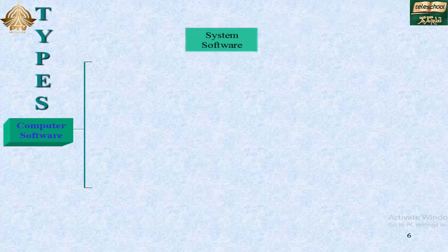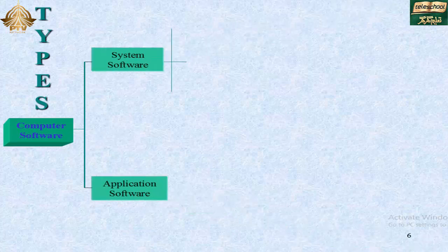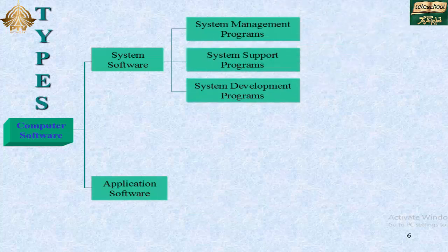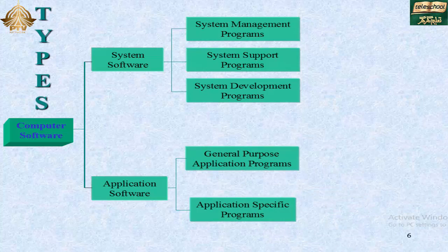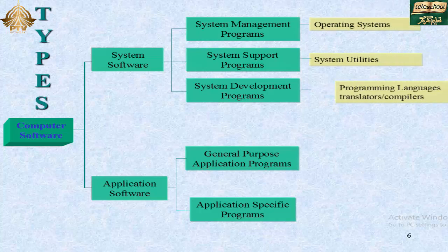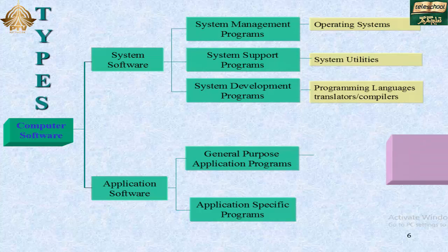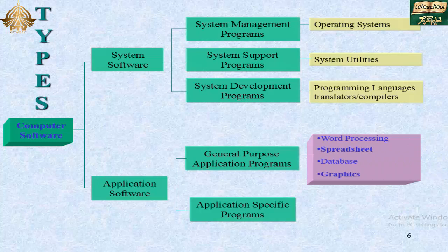Types of computer software: system software and application software. System software is divided into system management programs, system support programs, and system development programs. The system development program includes programming languages and translators.